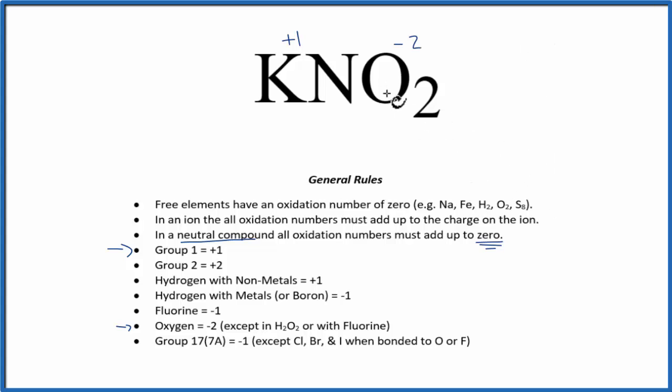So we can write up a statement like this. We can say plus one, that's the oxidation number on the potassium, plus the nitrogen's oxidation number, we don't know that. Plus oxygen we said was minus two, and we have two oxygens. And all of this, because it's a neutral compound, needs to add up to zero.